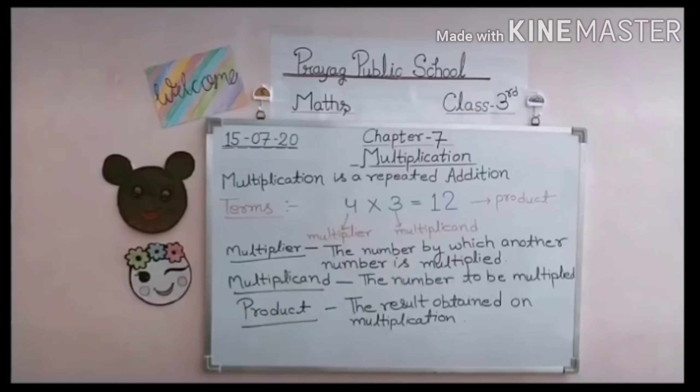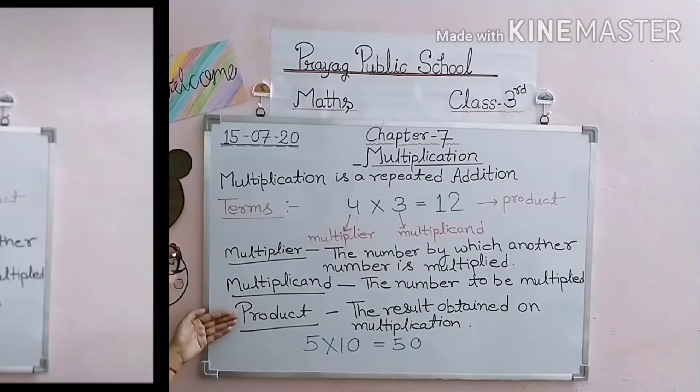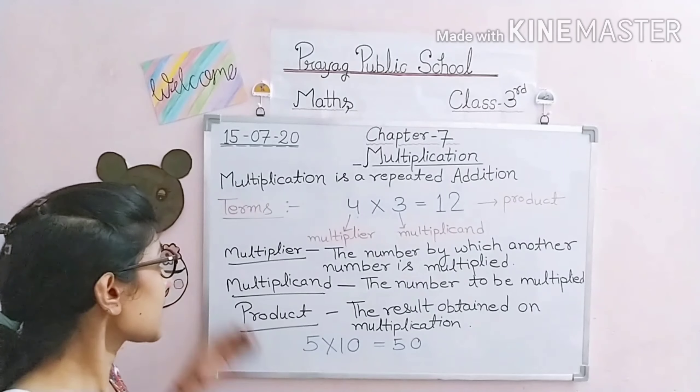Now what is multiplicand? The number to be multiplied. The number we multiply by - in 4 we multiply by which number? 3. So 3 is the multiplicand. And the result we get after multiplication, the answer, we call that the product. The result obtained on multiplication is called product. Here in this example, what is the product? 12. 12 is the product. So what are the three multiplication terms? Multiplier, multiplicand, and product.